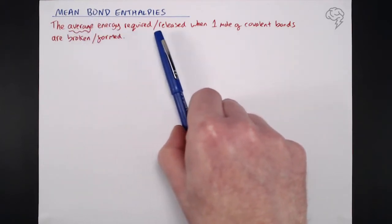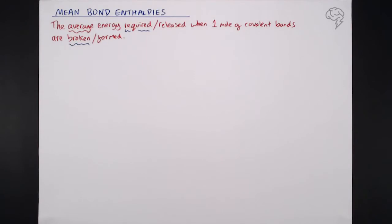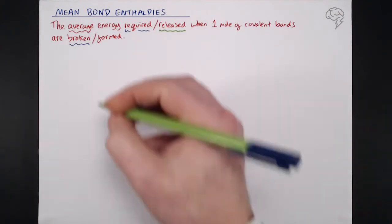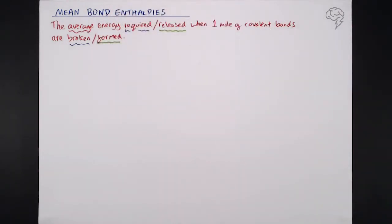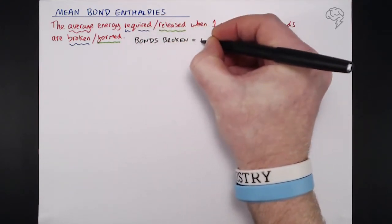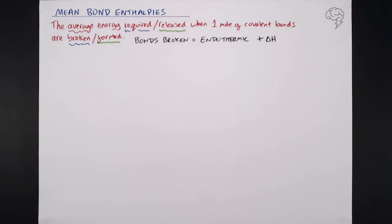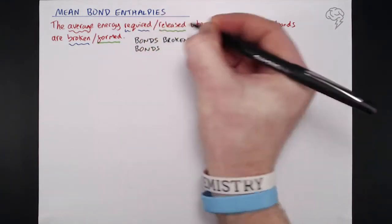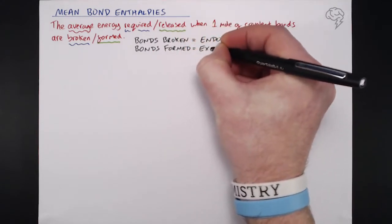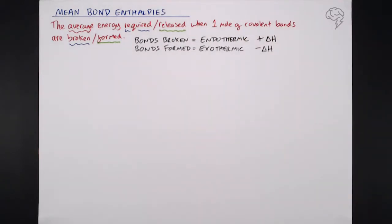Energy is required to break bonds — we need to put energy in. Energy is also released when bonds form. When bonds are broken it's an endothermic process, so delta H is a positive value. When bonds are formed that's an exothermic process, so delta H is negative.